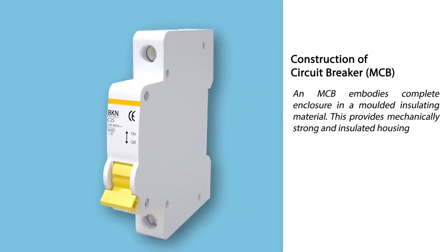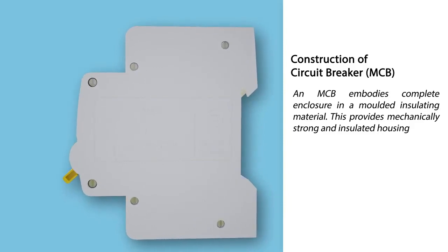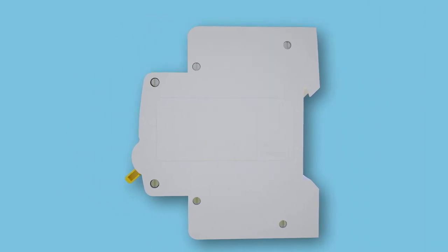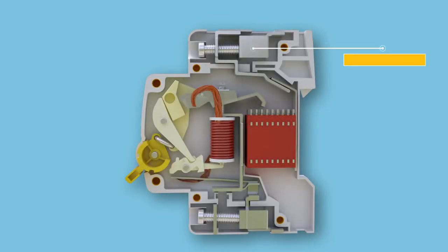Construction of Circuit Breaker — MCB. An MCB embodies a complete enclosure in a molded insulating material, which provides a mechanically strong and insulated housing. The incoming terminal is made up of electrolytic copper or silver alloy, and this is where the incoming phase is fixed.